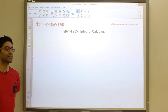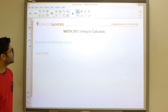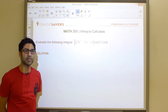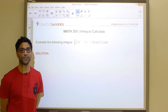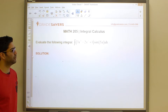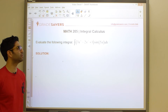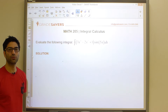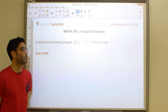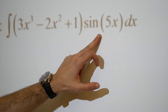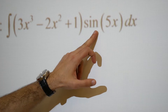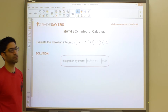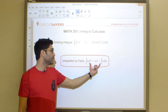Let's take a look at our next example. We need to evaluate the integral of 3x³ minus 2x² plus 1, all multiplied by sine of 5x. The first thing we need to do is diagnose what type of problem this is. We have a polynomial multiplied by a trig function — this could also be an exponential or logarithm — and the move is to use integration by parts.